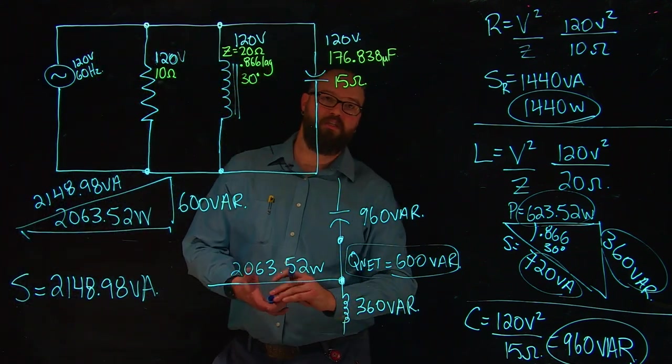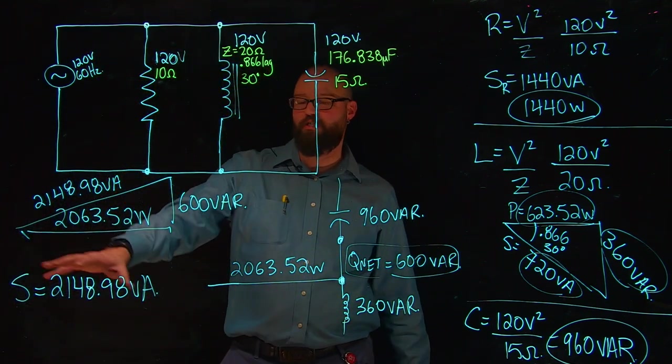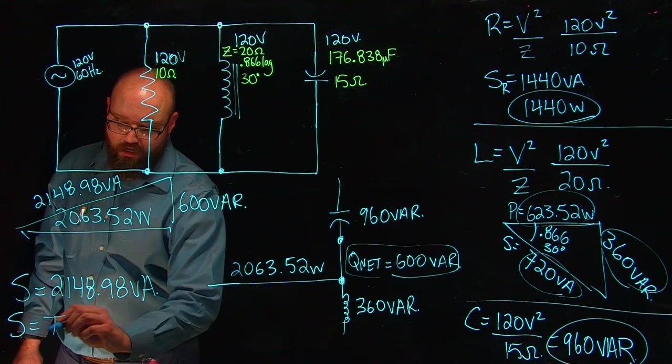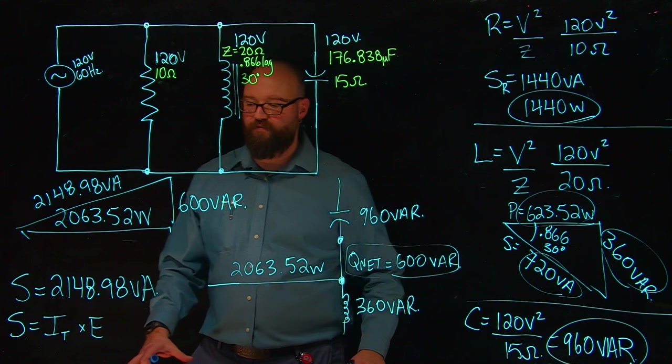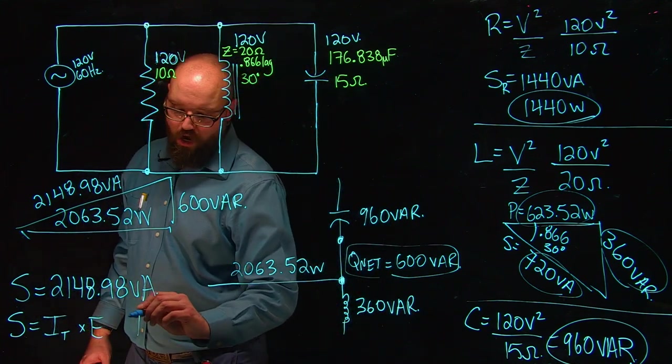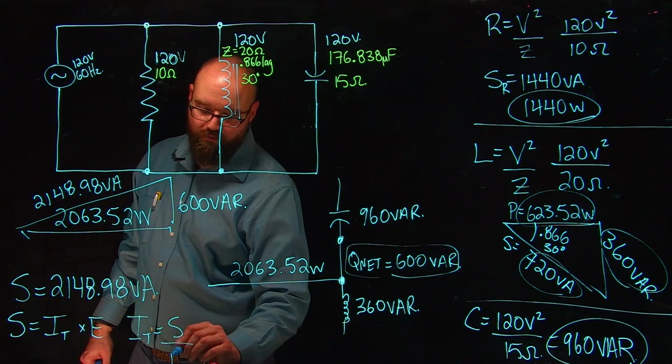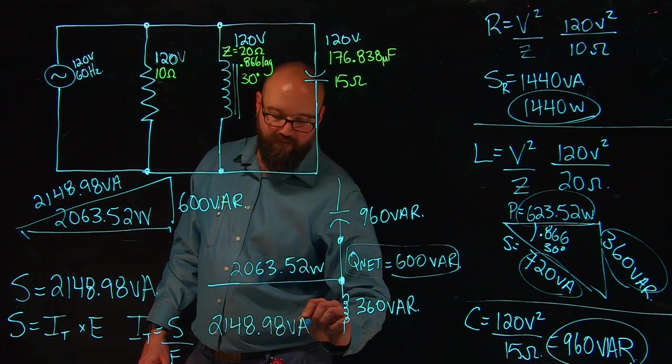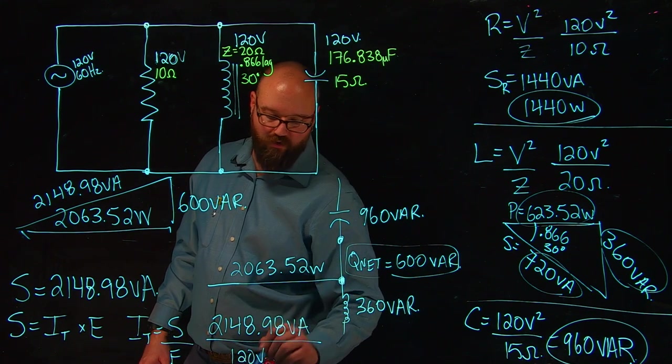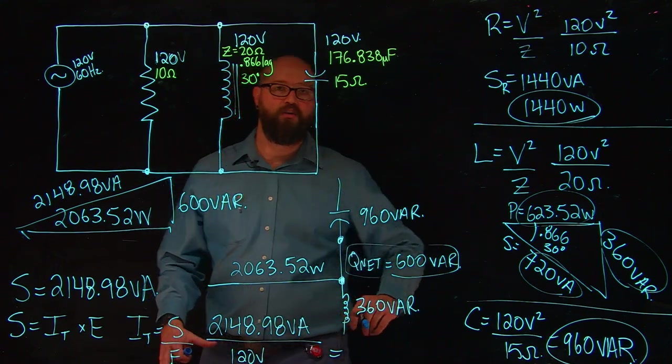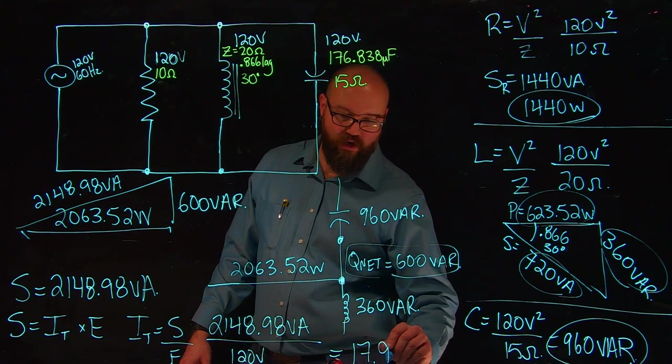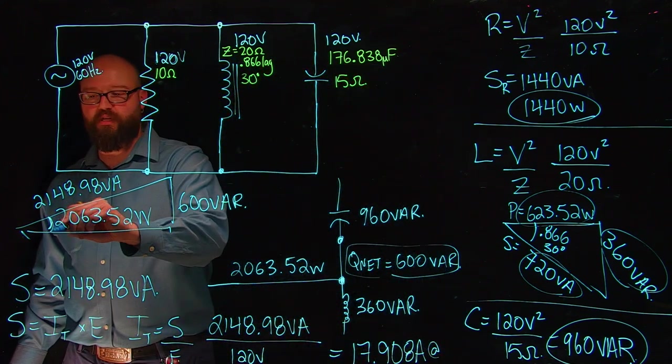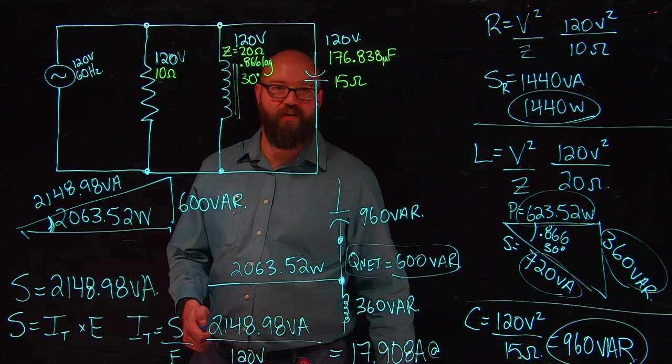Apparent power, this is one of my formulas, is I total times E. If I transpose that formula, I should see that I total equals S divided by E. Or in this case, we have our 2148.98 VA divided by our source voltage of 120 volts. It should give us the exact same amount of current that we had in the previous video. 17.908 amps. The last thing we have to do is we're going to figure out what our power factor is, and that will help us determine our phase angle as well.